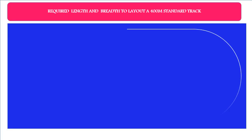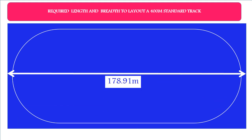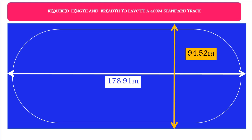To layout a 400 meter standard track with 8 outer lanes, the required length is 178.91 meters and the width is 94.52 meters.